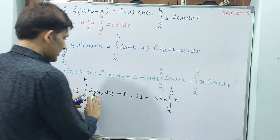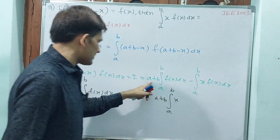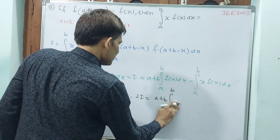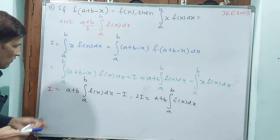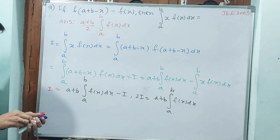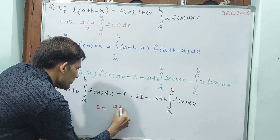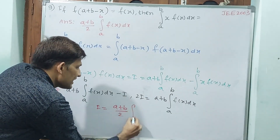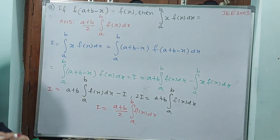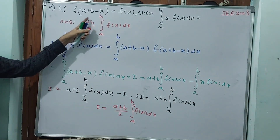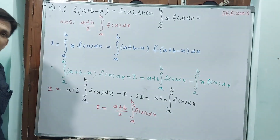f of x dx only. Keep in mind, here x will not come — x is obliterated, without x. (a plus b) is there. Now x will not come — just f of x dx. So 2I equals (a plus b) integral of f of x dx. We want I, then write: I is equal to (a plus b) by 2 times integral from a to b of f of x dx. Is this the answer? Yes — (a plus b) by 2, from a to b, f of x dx. Here x will not be there. Let's go for the next question.